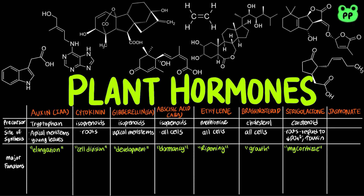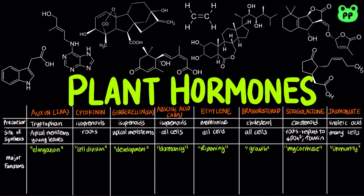Finally, jasminates are derived from linoleic acid and are synthesized by many cells. Jasminates mainly function in immunity. Now I'm going to cover how plant hormones affect specific organs and components.